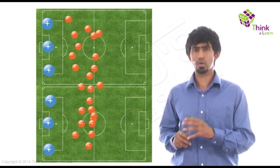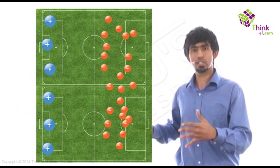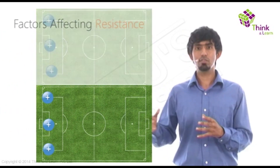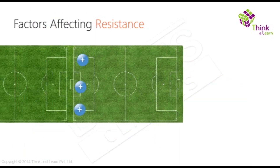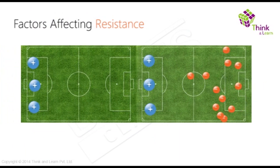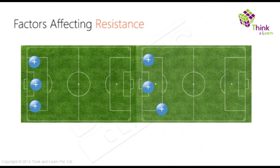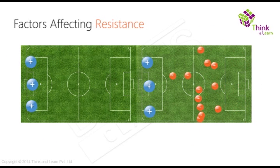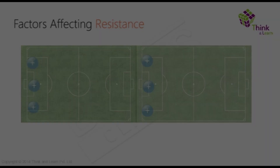The larger the area of the field, the more attackers we can introduce at the same time, so more of them make it to the end and the greater the current. Now, what if we keep the same area but make the field longer? As an attacker, you now have to pass more defenders before you reach the end. If one defender doesn't catch you, the next one might. Thereby, the probability of you reaching the other end reduces — current reduces, more defenders catch more attackers, and resistance increases.